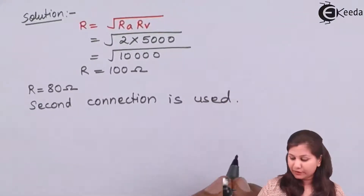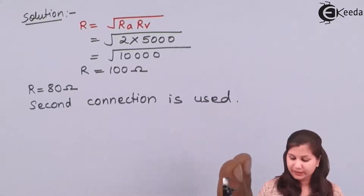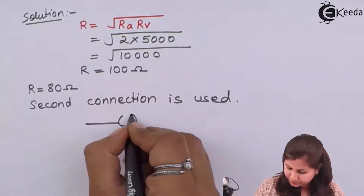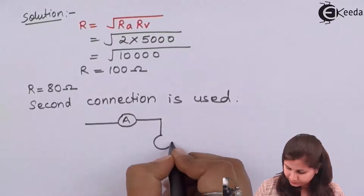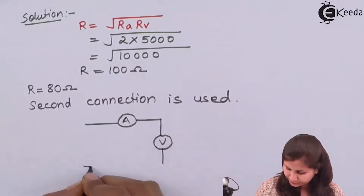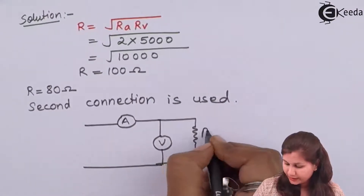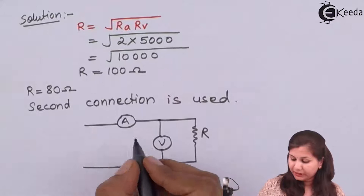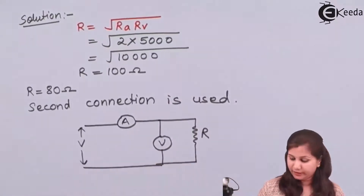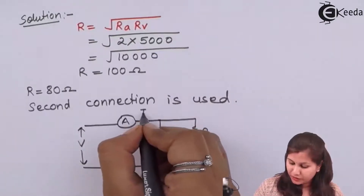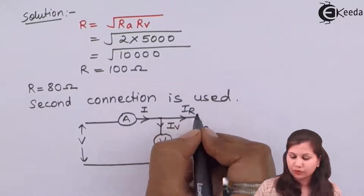In the second connection, the voltmeter is connected close to the resistance. This is the unknown resistance we want to measure, this is the voltmeter, this is the ammeter, and here a voltage source is connected. Now this ammeter is going to measure the current which is the sum of IV plus IR.